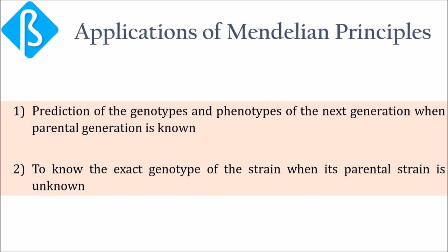Number two is to know the exact genotype of the strain when its parental generation is unknown. Several methods are there that apply the Mendelian principles for easing the genetics experiments.